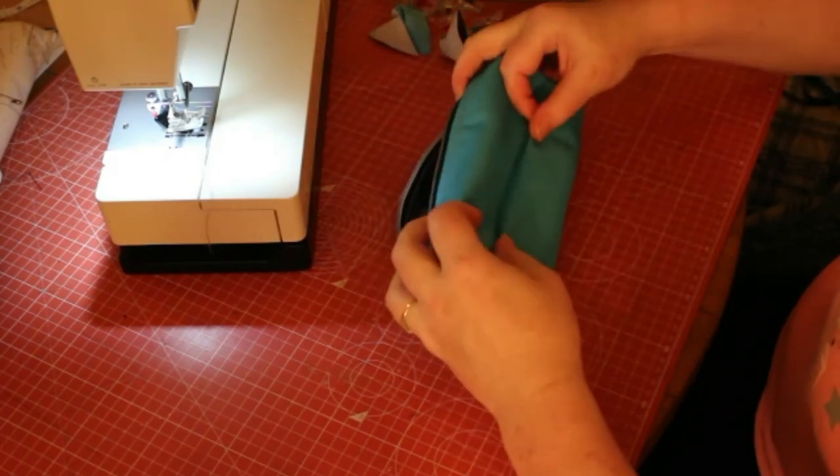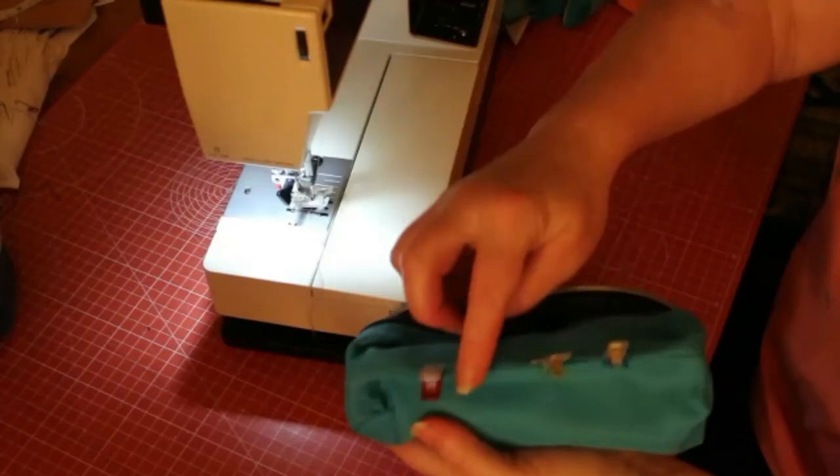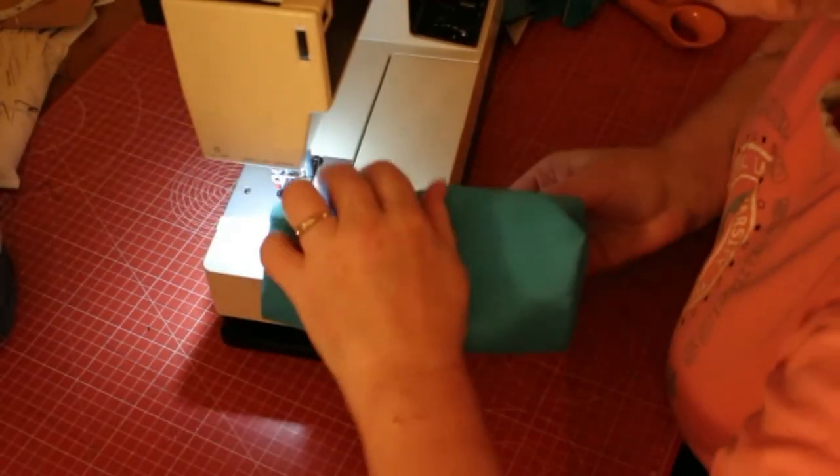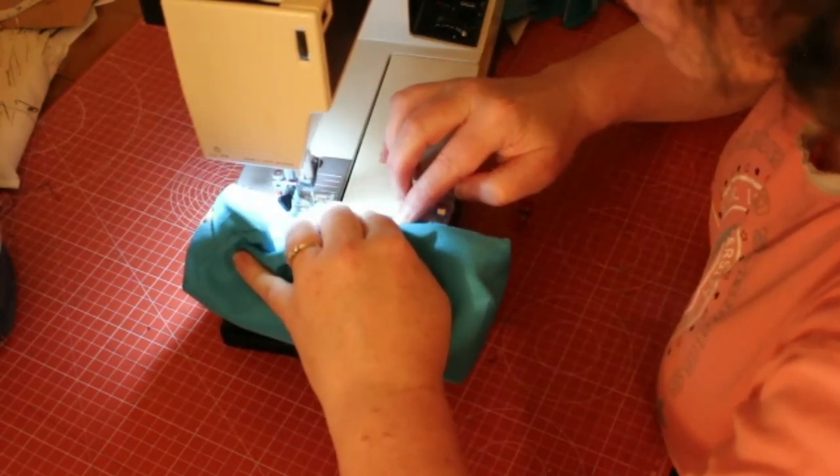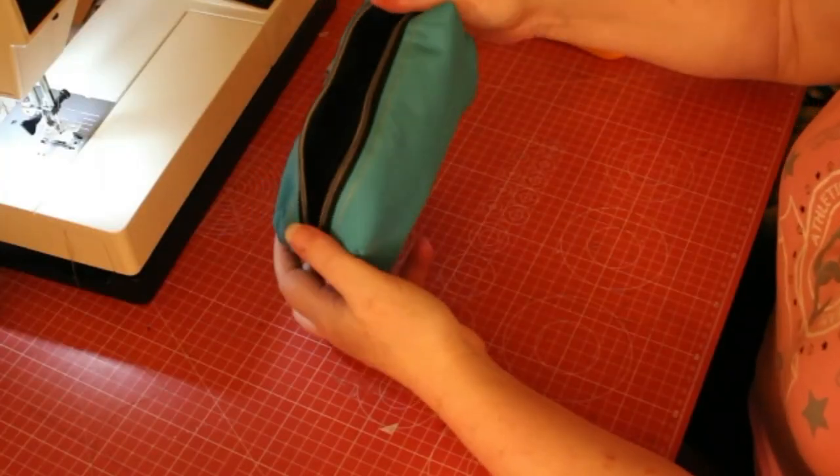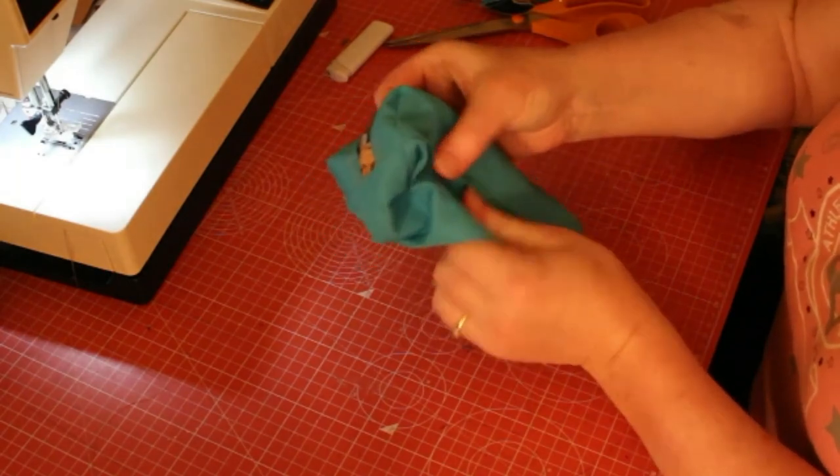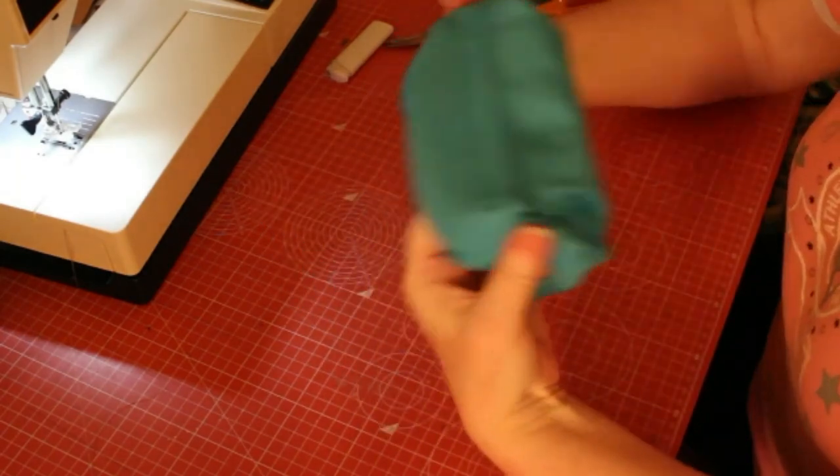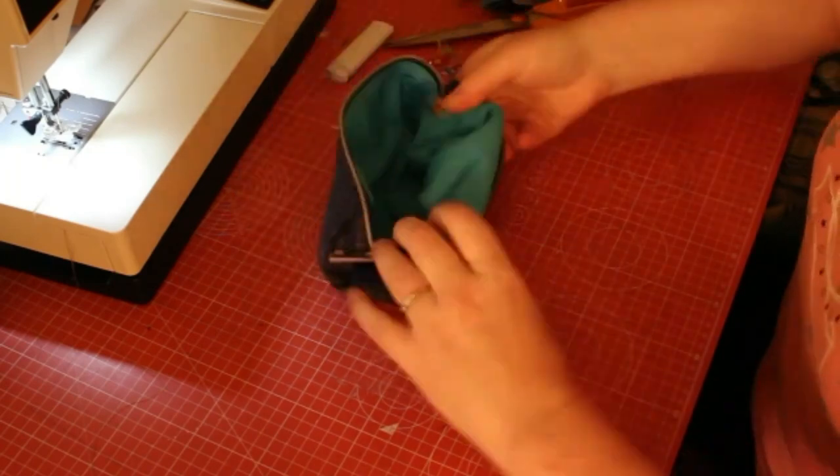Turn the bag out and sew up that opening. I use Wonder Clips. You could do a ladder stitch, a hand stitch, but I find it difficult to sew waterproof canvas. So I'm just stitching with a short stitch length and backstitch at the beginning and end of the opening.